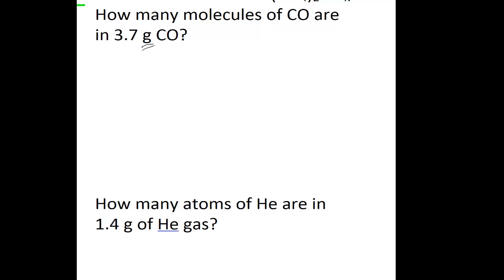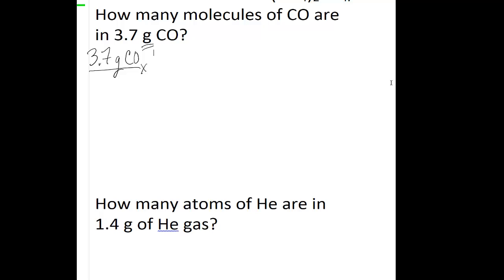Because what Avogadro's number is telling you is that in this case, you'd have 6.022 times 10 to the 23rd molecules of carbon monoxide in one mole of carbon monoxide. So in order to relate grams to molecules, you need to go through moles. You start with 3.7 grams of carbon monoxide, and then you use the molar mass to get from grams of carbon monoxide to moles of carbon monoxide.